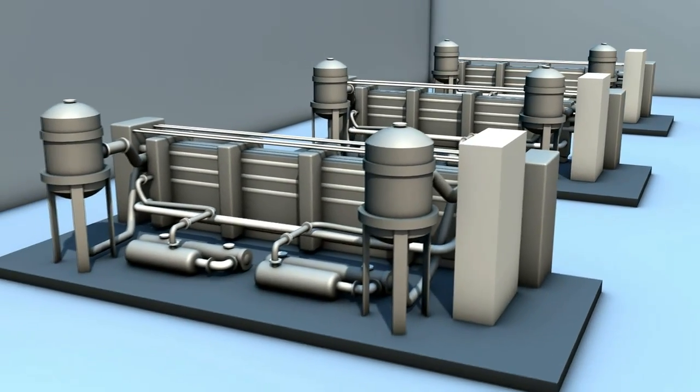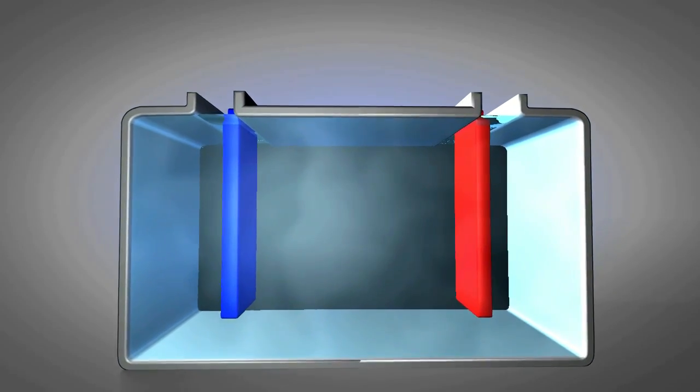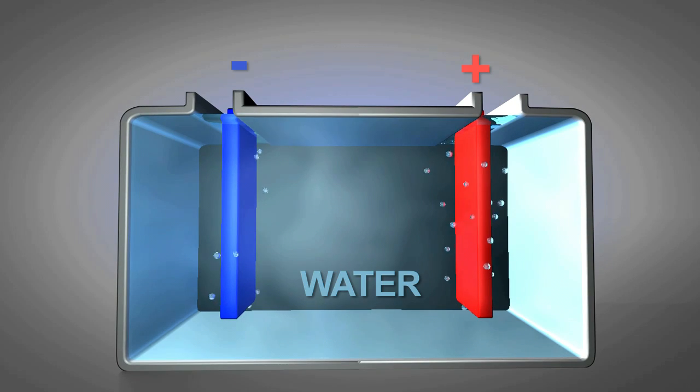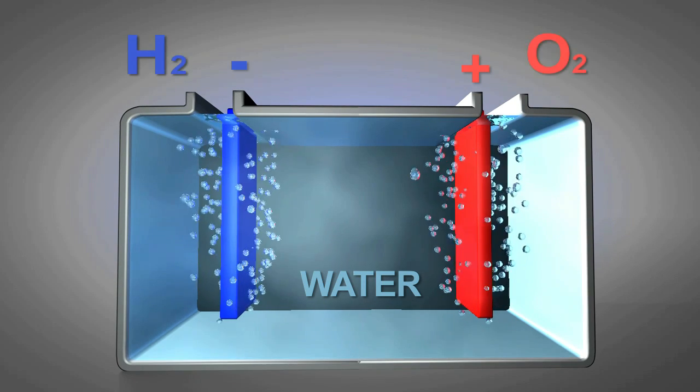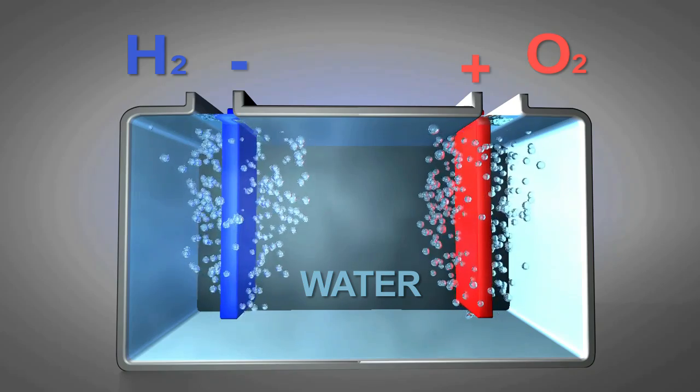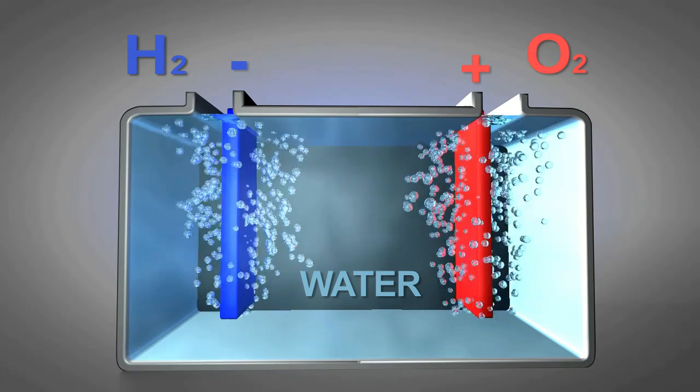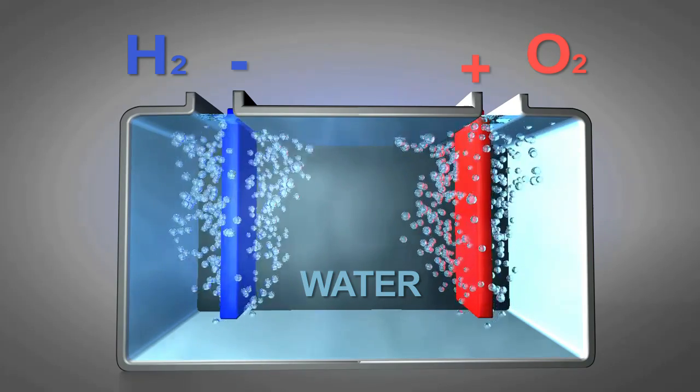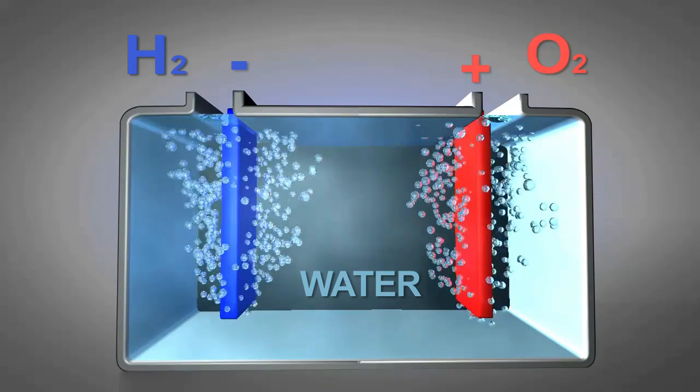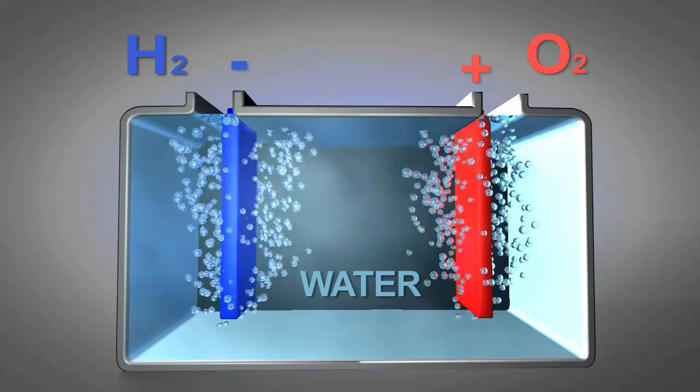But how does that work? Experts call this principle power-to-gas. It can be described as follows: the excess power generated at the time of low demand will be used for electrolysis to split water into oxygen and hydrogen.